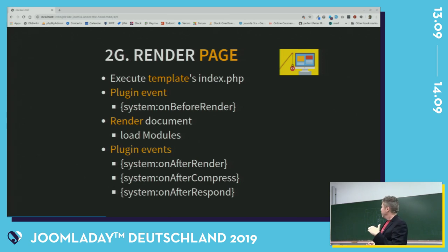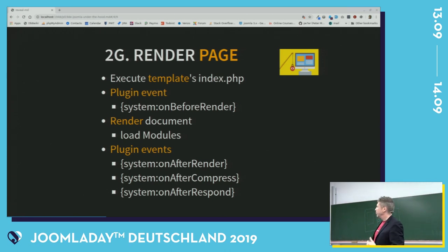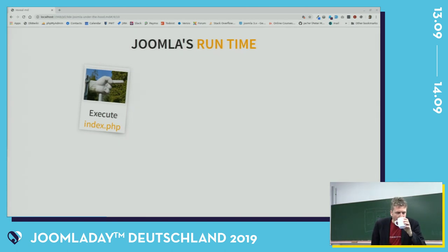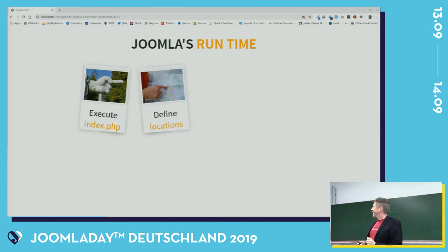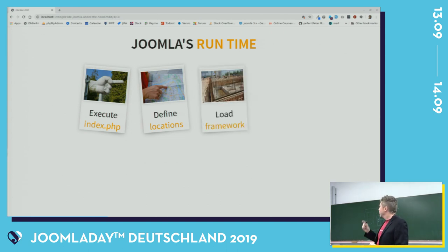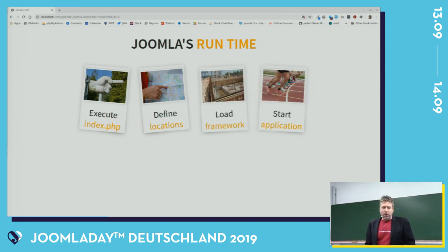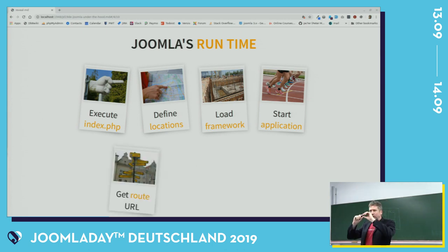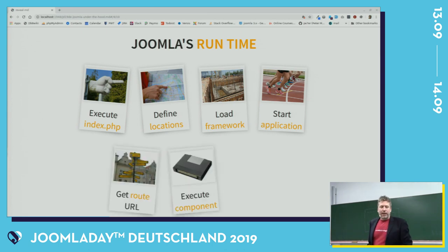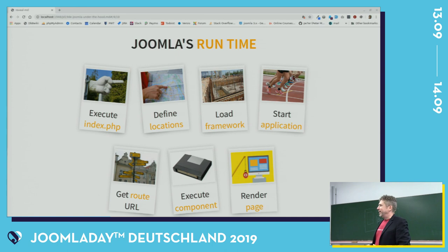OnAfterCompress means after GZIP compression, if you have that enabled. OnAfterRespond is just after that. So in short: a visitor visits your website. The index.php gets executed. It will define the locations of all the necessary folders. It will load the Joomla framework. It will start the application. It will get the route, and because of the route it determines which component will be executed. Then it will render the page, and the visitor will see the result. This all happens under the hood.